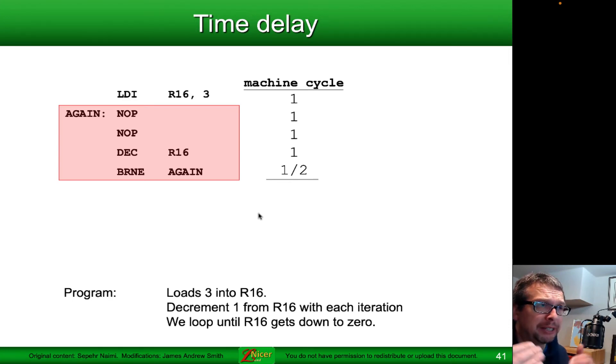In order to know the number of counts in terms of clock cycles, we have to know when that branch, if not equal, engages. We do the initialization that takes one clock cycle. Then it takes three clock cycles for the first nop, three clock cycles for the second nop, three clock cycles for the decrement. Then we have two times two clock cycles for the branch, if not equal, and one clock cycle for the branch.